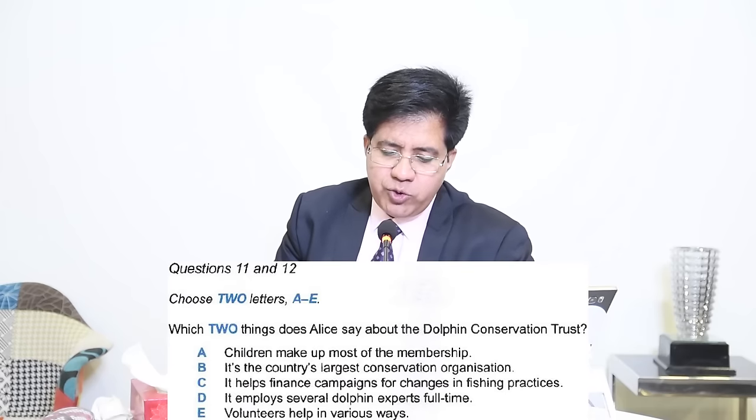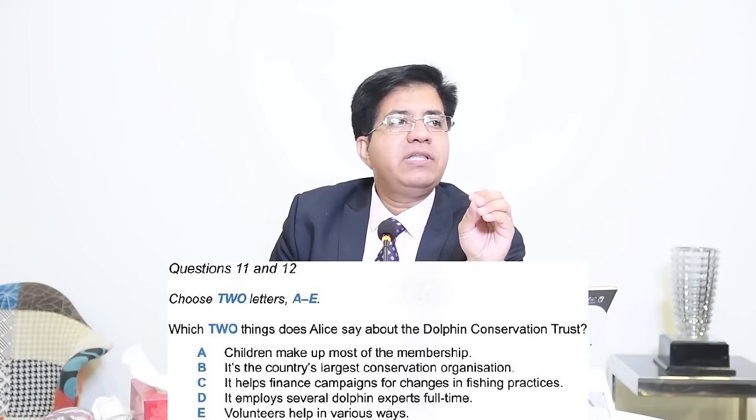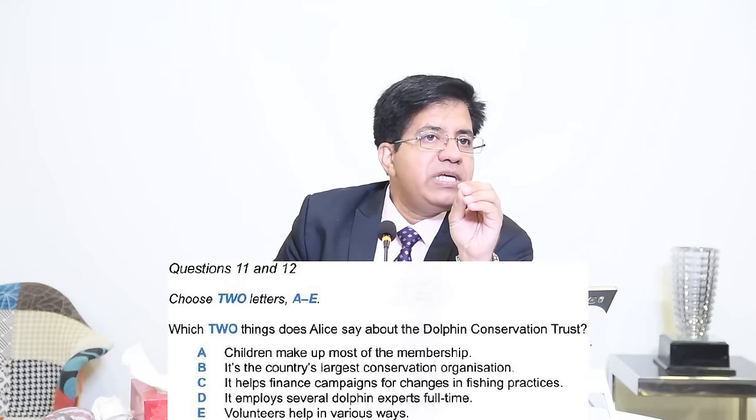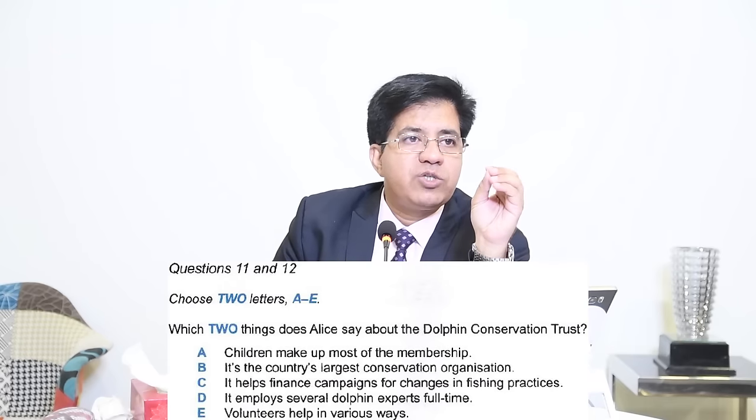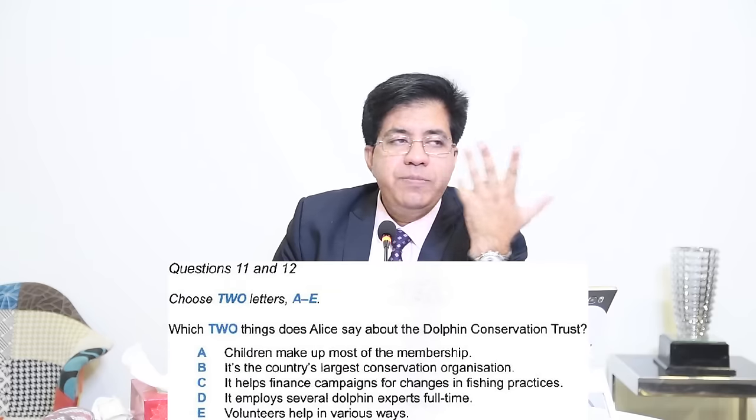Now we've got IELTS listening section 2. Keep in mind section by section it becomes more difficult: section 1 is basic level, section 2 is intermediate, section 3 is upper intermediate, and section 4 is advanced level of English. Section 2, questions 11 and 12 say 'choose two letters A to E' — that means it's a double multiple choice question.